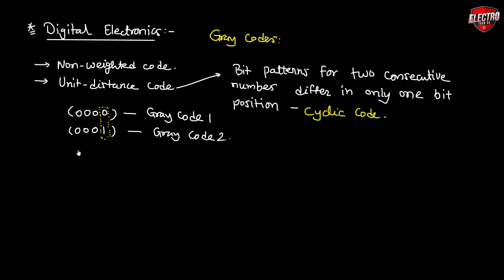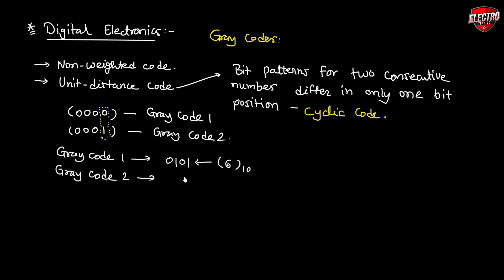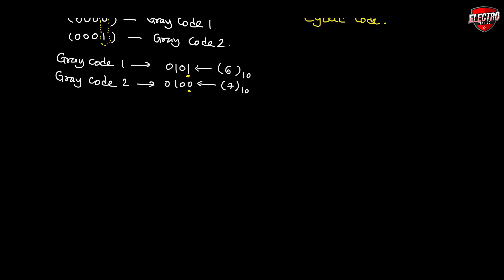Let's take one more example. The gray code for decimal six is 0101, and the gray code for decimal seven is 0100. If you observe both codes, there is only one bit variation — the LSB varies from one to zero, and the remaining three bits are the same in both gray codes. So this is known as unit distance code — there is only one bit difference between the two codes.